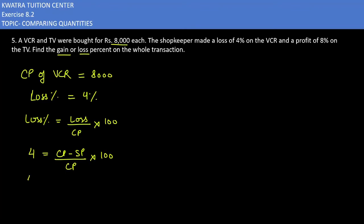Now you will put values here. CP value is 8,000 minus SP over 8,000 into 100. Now what step you can take next is you can cancel first of all two zeros with two zeros.